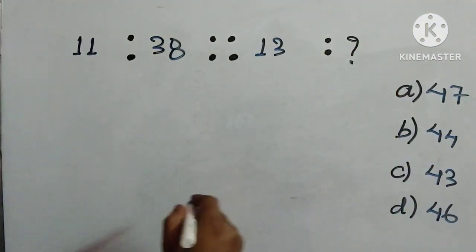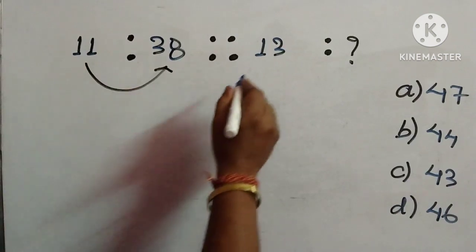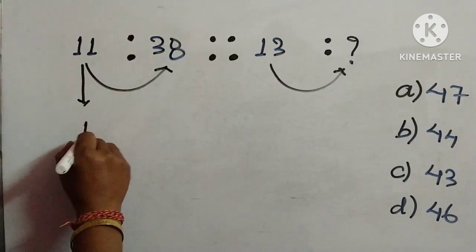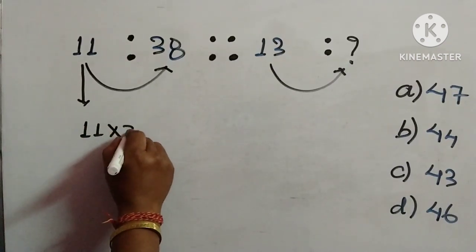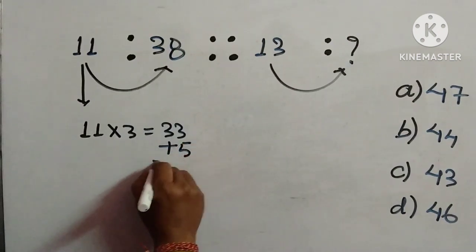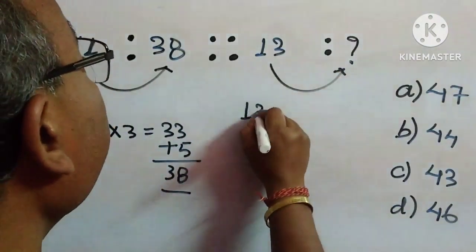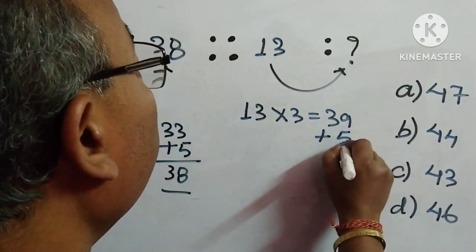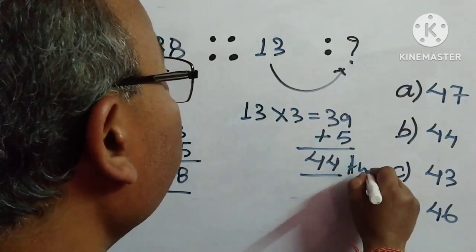First we try to get 38 from 11, then implement the same process for the answer. We consider 11: multiply 11 by 3 to get 33, then add 5 to get 38. Applying the same process to 13: multiply 13 by 3 to get 39, then add 5, giving 44. So 44 is the answer — option B.